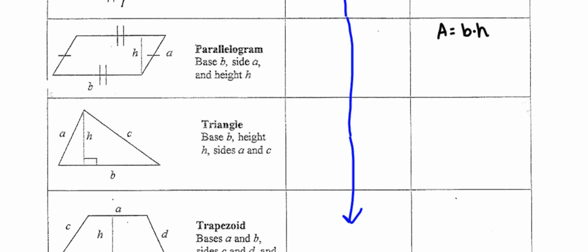The triangle is going to be a little twist on this pattern, but it's really not so far outside of the whole base times height idea. In the case of the triangle, we're really looking at half of a rectangle. So the area is one half times base times height, or base times height divided by two — really just a variation on area equals base times height.